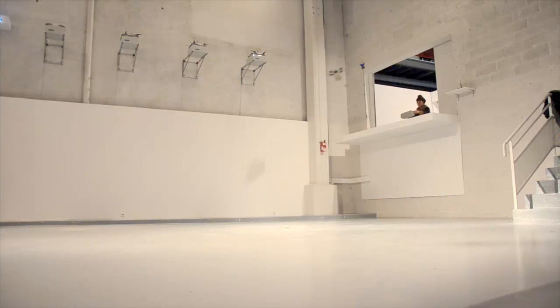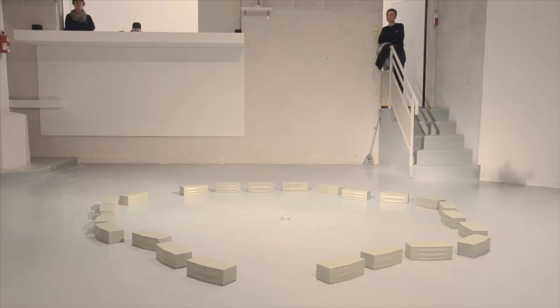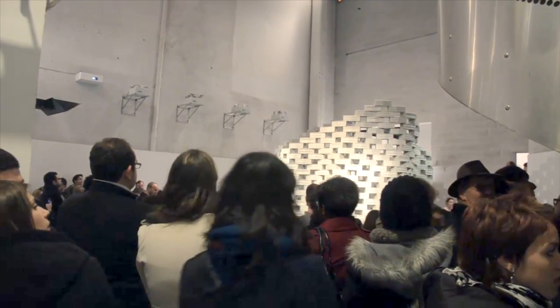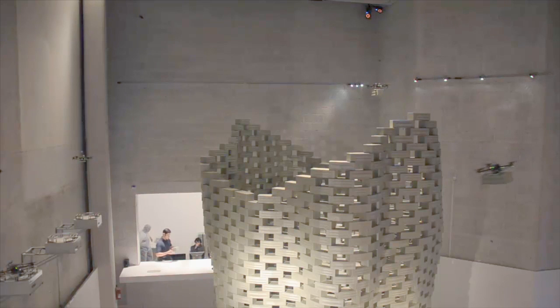The project is called Flight-Assembled Architecture, happened in 2012 in the Thrac Centre in Orléans, where it was the first time that we had flying machines building a differentiated structure made out of one and a half thousand elements. It was in the end a six meter tall tower.